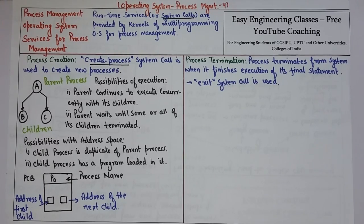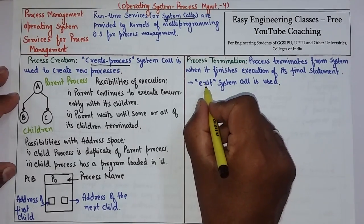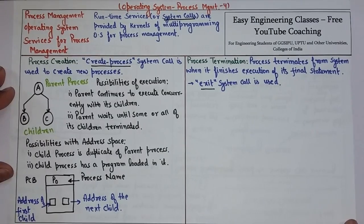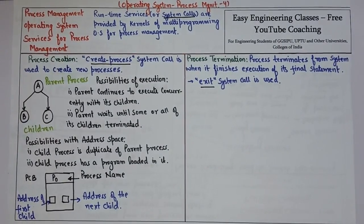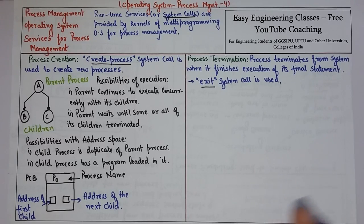That is about process creation. Now we have process termination. Once the execution of a process is done, that process terminates and releases all its resources from the system. Process termination is done with the 'exit' system call. Whenever a process encounters the exit system call, it goes for termination. After termination, the process releases all computing resources such as physical and virtual memory, files, and I/O devices, so that these resources can be used by another process.